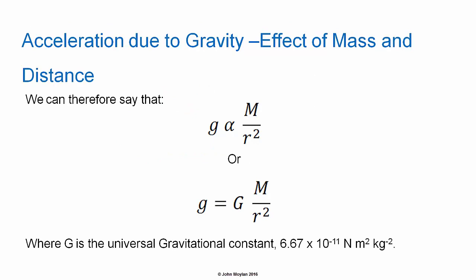We can combine these relationships into a single relationship so that g — acceleration due to gravity in meters per second squared — is directly proportional to m, the mass of the body exerting the gravitational field in kilograms, divided by r², where r is the distance from the centre of mass in meters. We can turn this relationship into an equation by inserting a constant of proportionality which we designate as capital G, giving us: little g equals capital G multiplied by m divided by r².